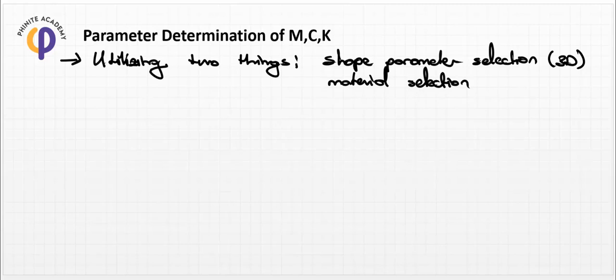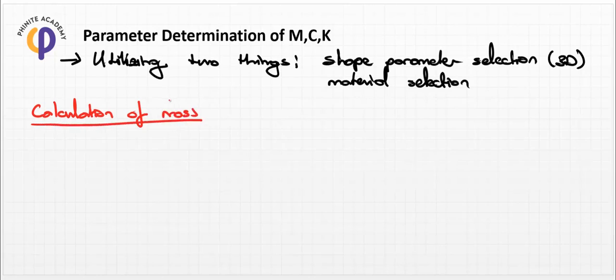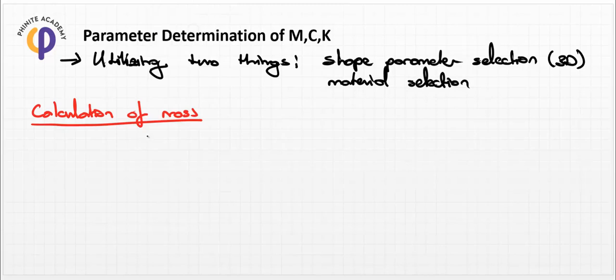First, we should define the calculation of the mass parameter. In real life mechanical systems, mass is directly related to volume and material selection, because mass M is equal to density times volume: M = ρ·V.